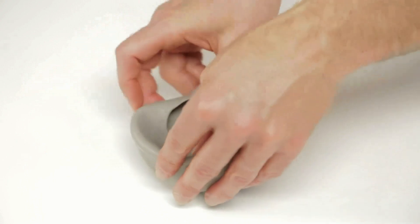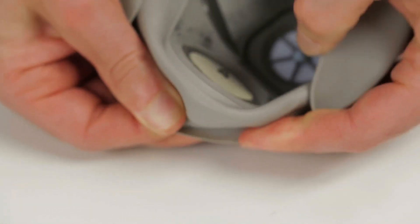To remove an existing inhalation valve, grasp the valve and pull it off the center post.